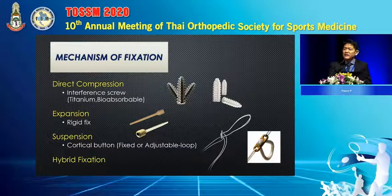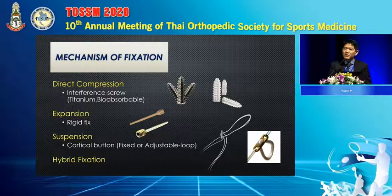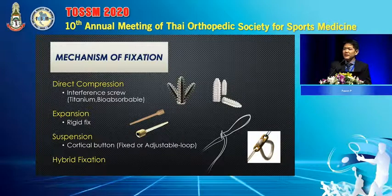The mechanism of fixation covers a lot of groups. The first group is Direct Compression and Interference Screw. Then Expansion and Rigid Fix. Suspension and Cortical Button. Hybrid Fixation combines a lot of fixation mechanisms.